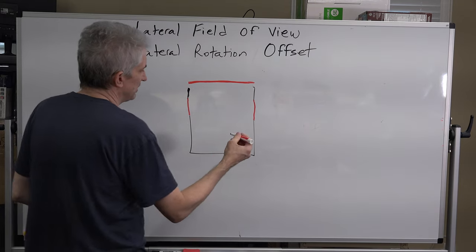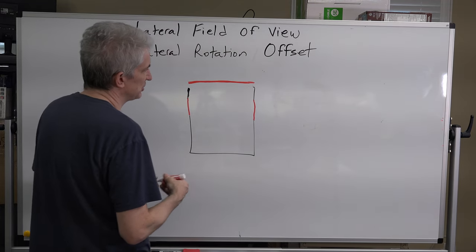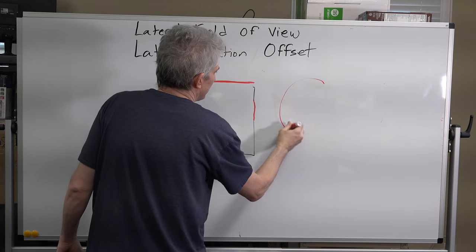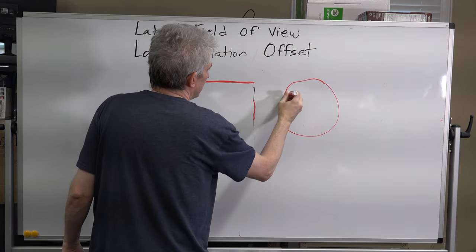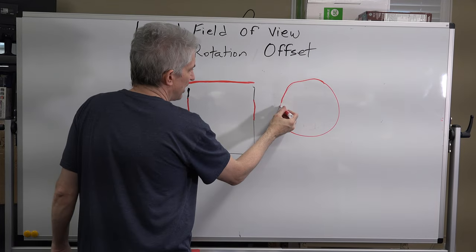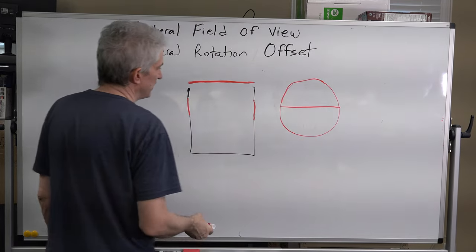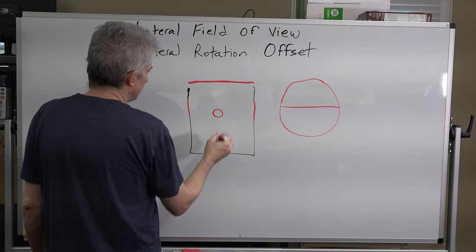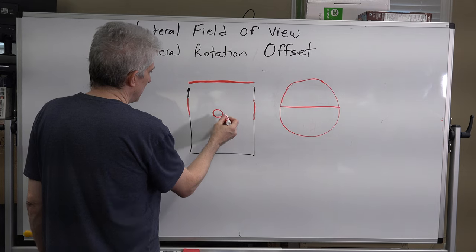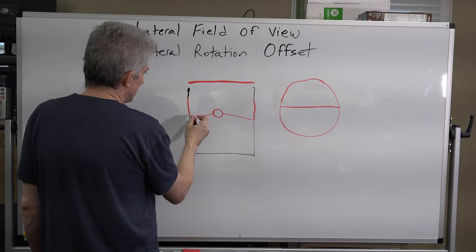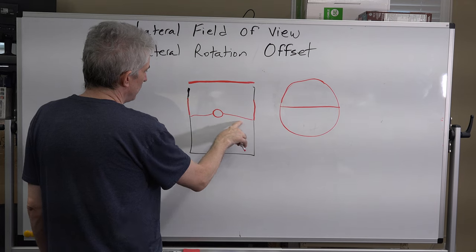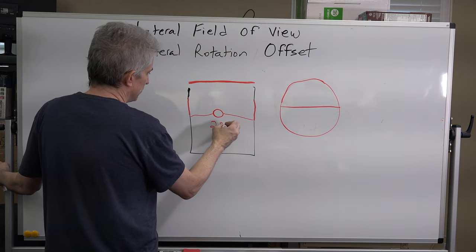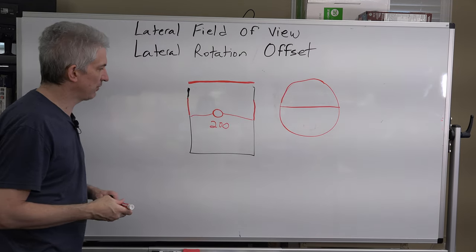So if you keep in mind the example of a circle being 360 degrees, obviously half of a circle is 180, and you consider where this guy is sitting, let's say he's sitting here, and he puts his arms out like this, and that's a little more than 180 degrees, so I'll call this 200 degrees of total lateral field of view.